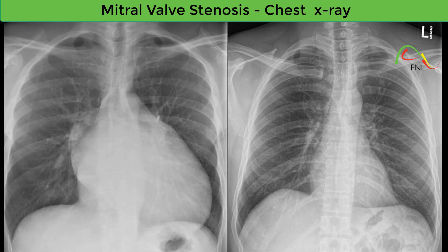Cardiomegaly. The chest X-ray on the left shows cardiomegaly. The cardiothoracic ratio is used to determine cardiac size on chest X-rays. It is measured on a PA chest X-ray and is the ratio of the maximal horizontal cardiac diameter to the maximal horizontal thoracic diameter, measured to the inner edge of the ribs or edge of the pleura. A measurement of over 0.5 is usually considered abnormal, meaning cardiomegaly is present.